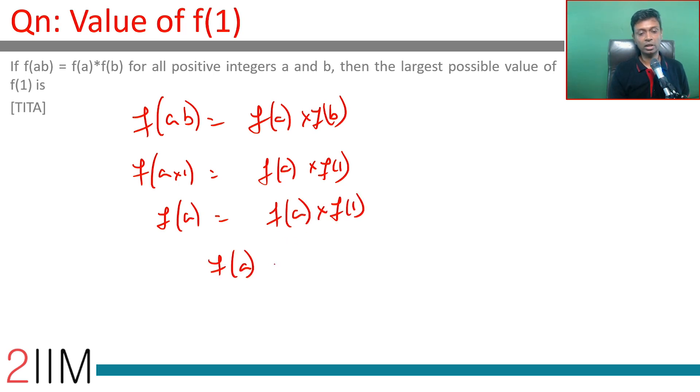Or f of a into f of 1 minus 1 is 0. The two possibilities here, remember this: either f of a is 0 or f of 1 is 1.